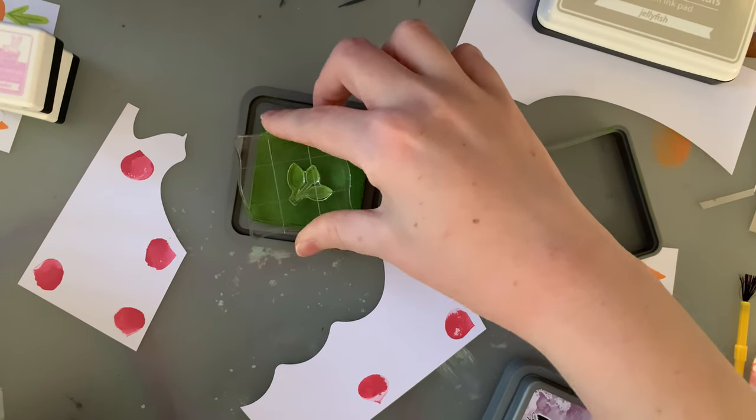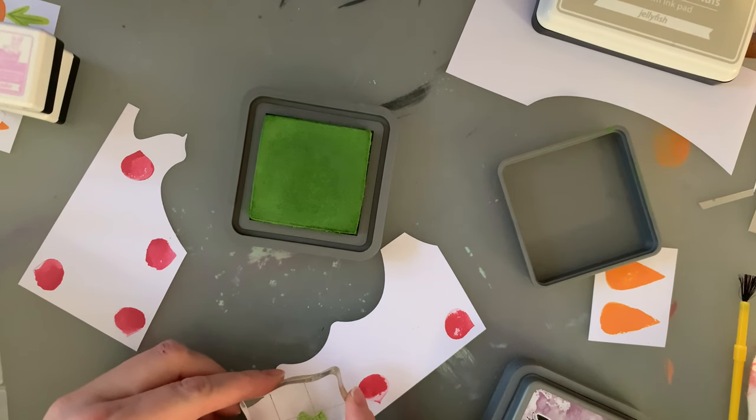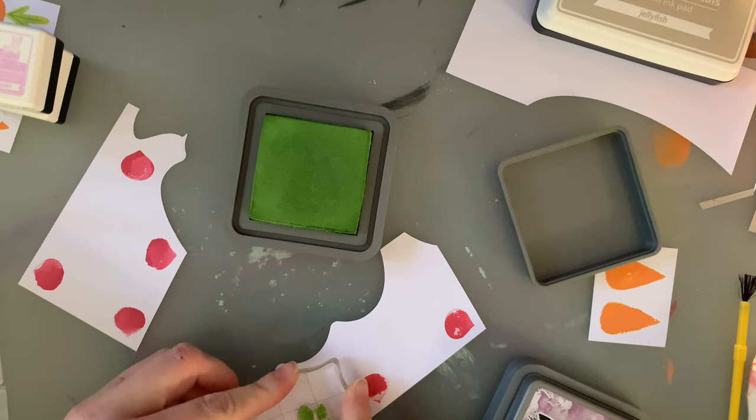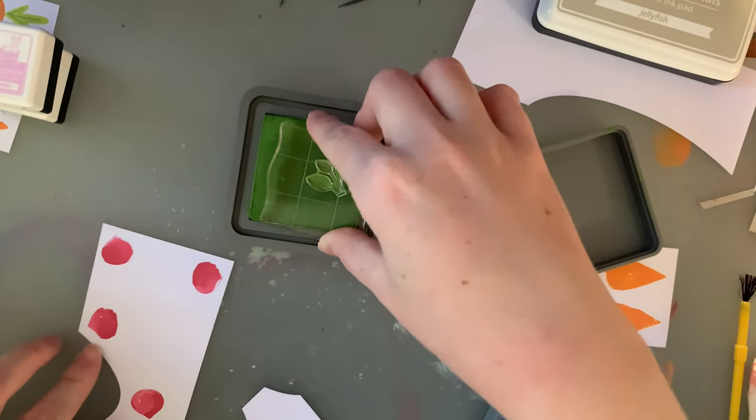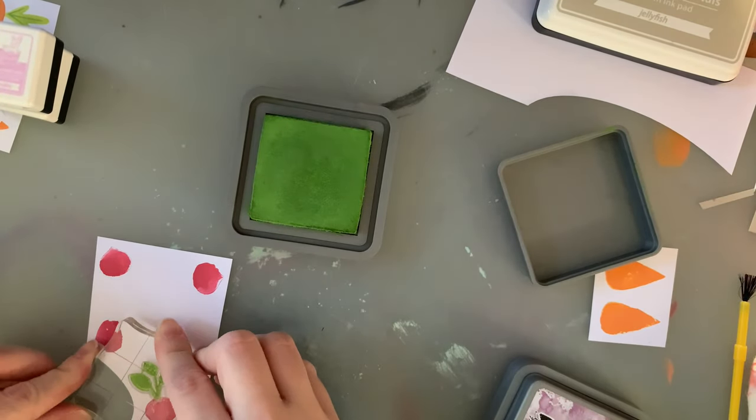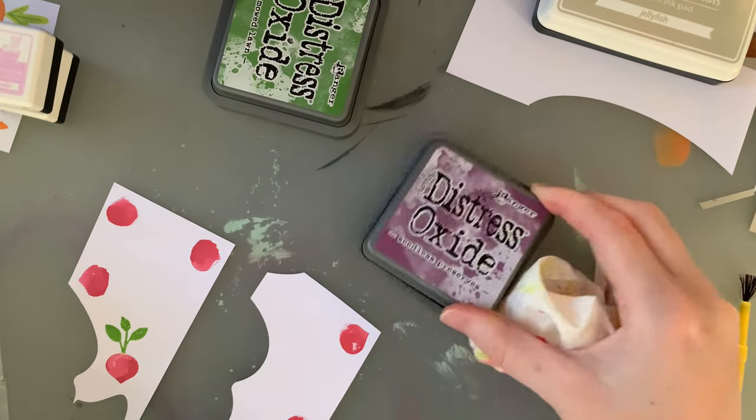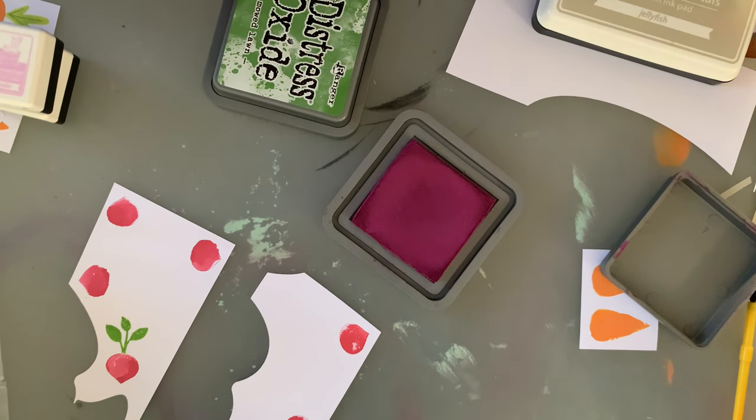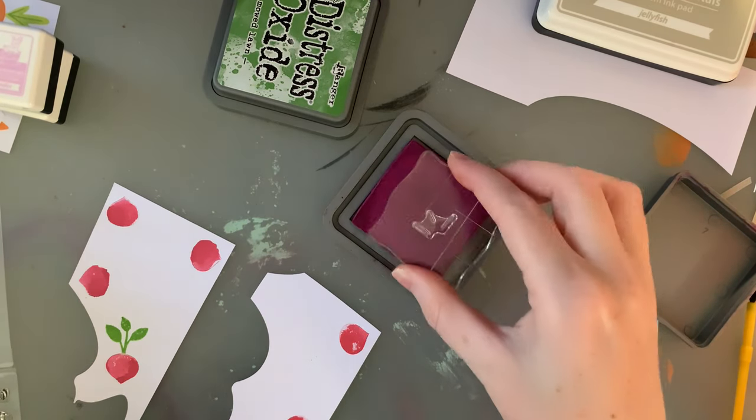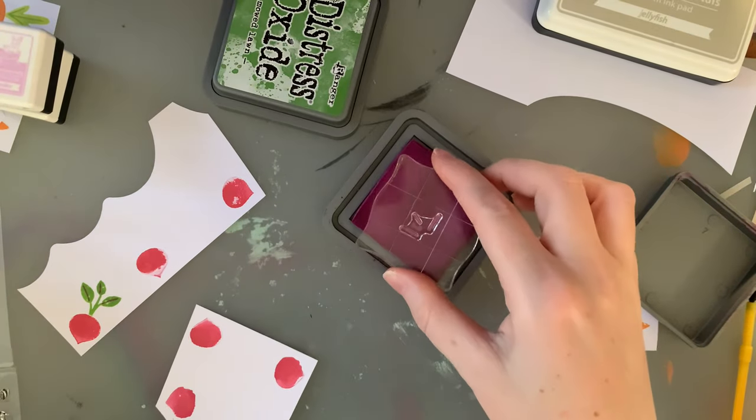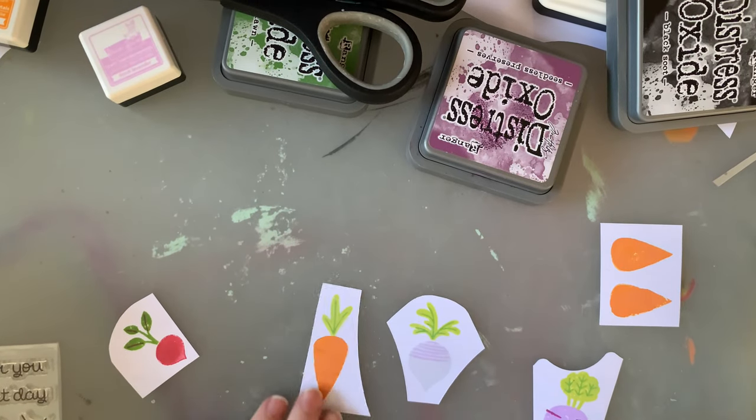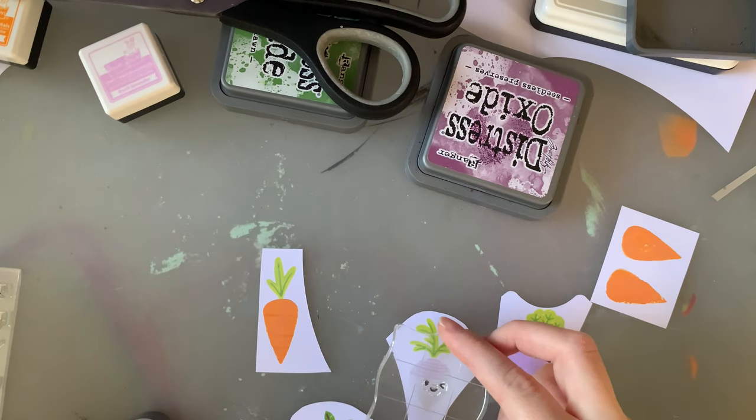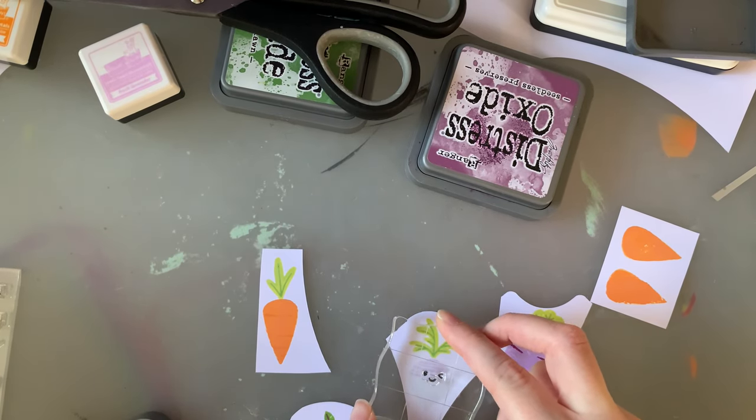For my little beets, I didn't have the perfect color, so I made my own. I used some Seedless Preserves and some Candied Apple. I put them both on my craft mat and with a little bit of water I mixed them together. That's why these kind of look a little bit blotchy, a little bit watercolory - they were quite wet when I stamped them. But I really like how they dried out and I think it turned out to be a really good color for the beets. So here are my little veggies all stamped out. It was then time to put those adorable little faces on. I used some black ink for these little winky and smiley faces.